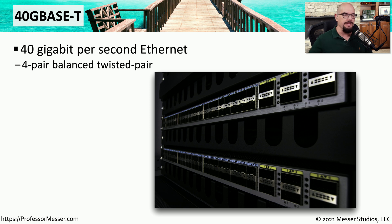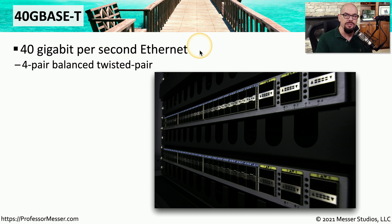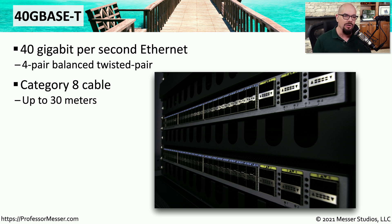One of our newer Ethernet standards is 40GBASE-T, which provides 40 gigabits per second Ethernet over twisted pair cabling using all four pairs. This requires a minimum of category 8 cable and only allows communication up to 30 meters.